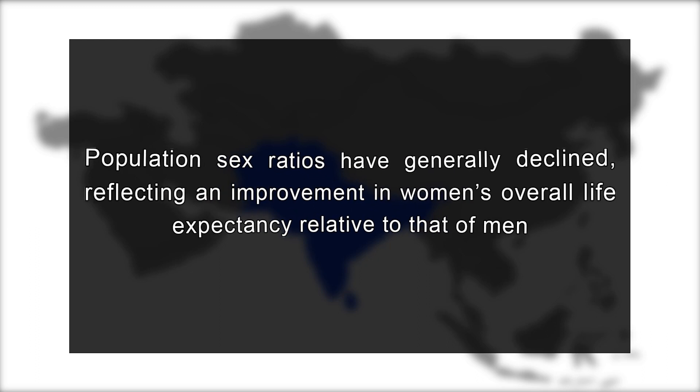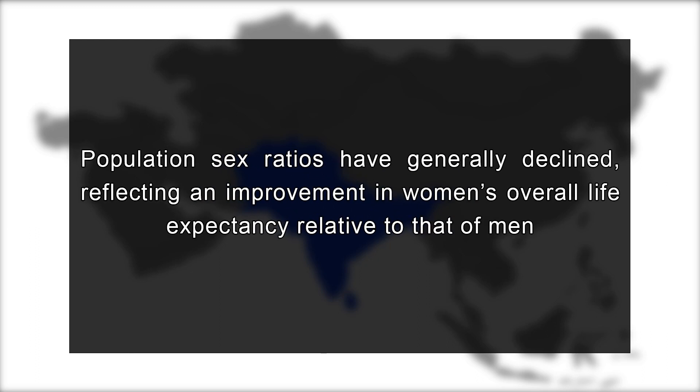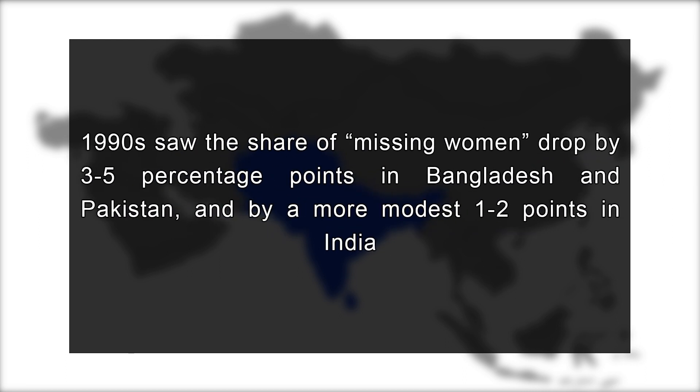These older cultural norms and patriarchal practices prevalent in vast regions of South Asia have of course been considerably altered by the recent histories and development trajectories of countries within this region, with varying implications for their sex ratios. Population sex ratios have generally declined, reflecting an improvement in women's overall life expectancy relative to that of men. The 1990s saw the share of missing women drop by 3-5 percentage points in Bangladesh and Pakistan and by a more modest 1-2 points in India. However, the decline in overall sex ratios has been accompanied in some countries by a worrying new trend: an increase in sex ratio at birth attributed to the growing prevalence of female-selective abortions.